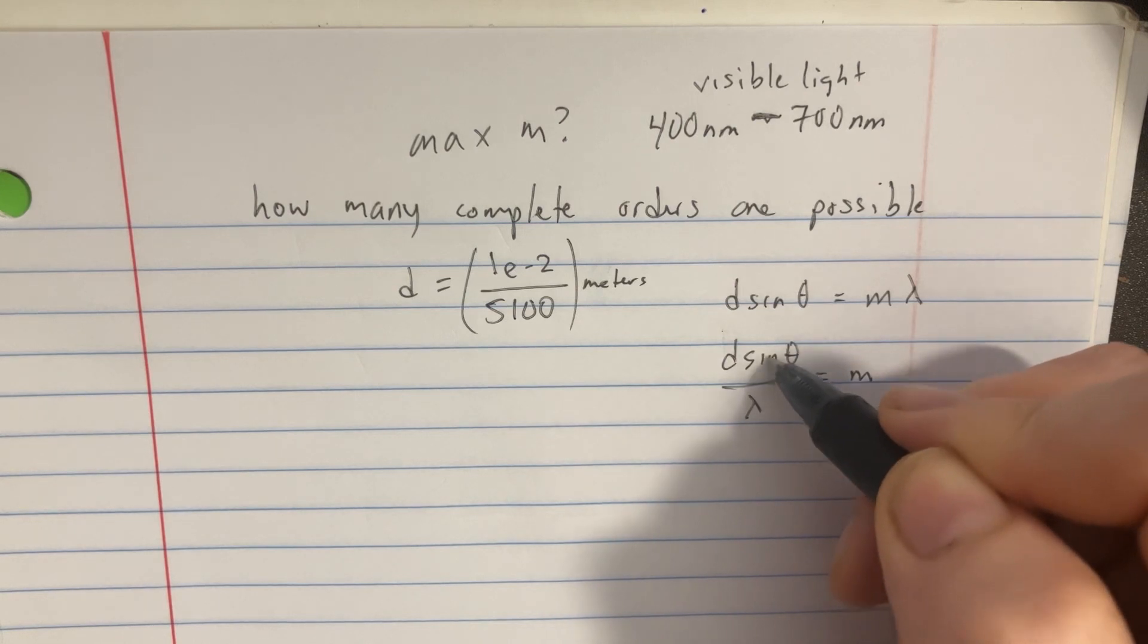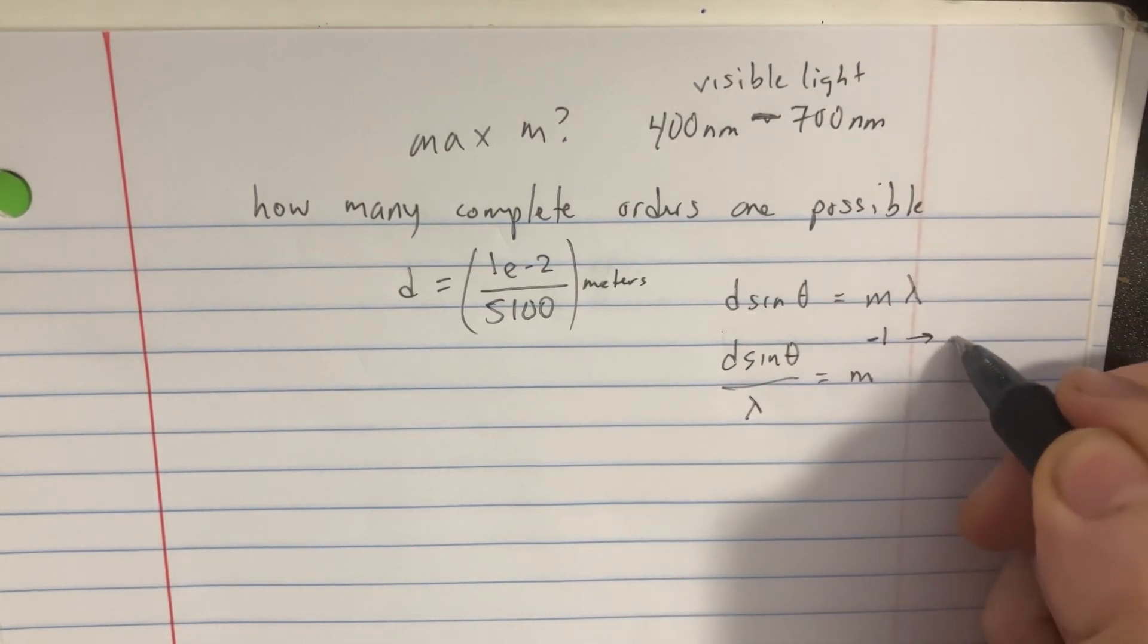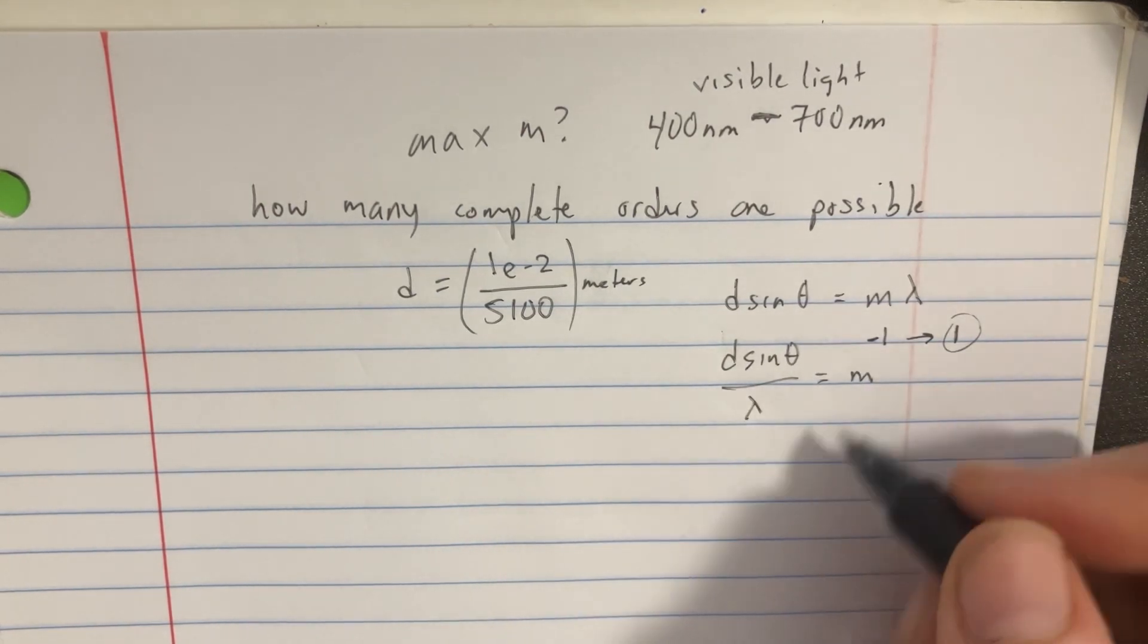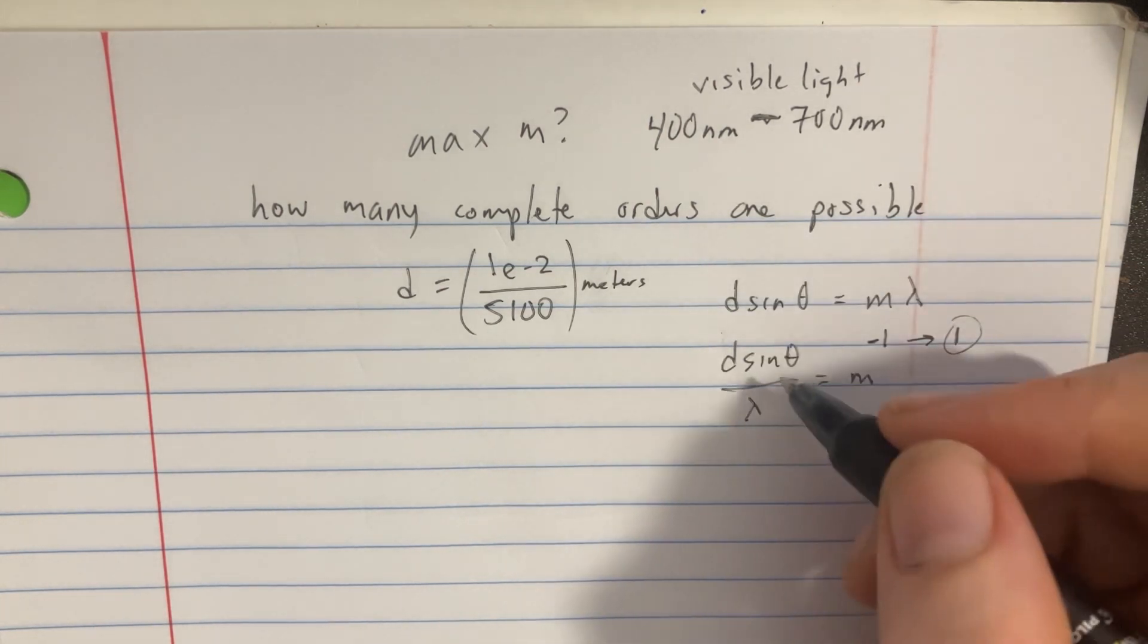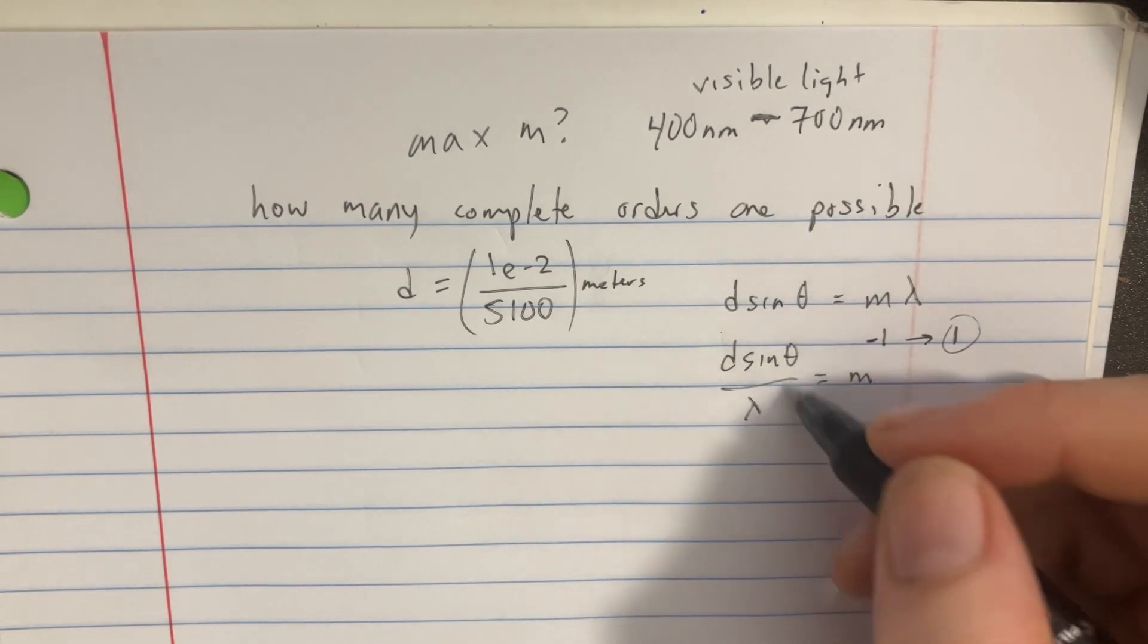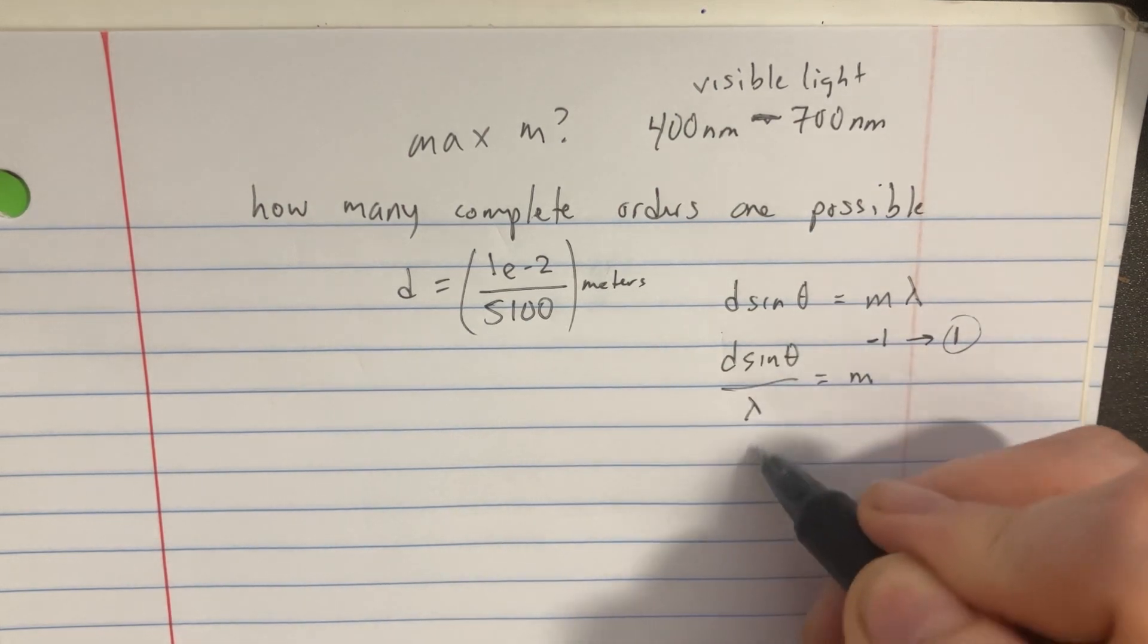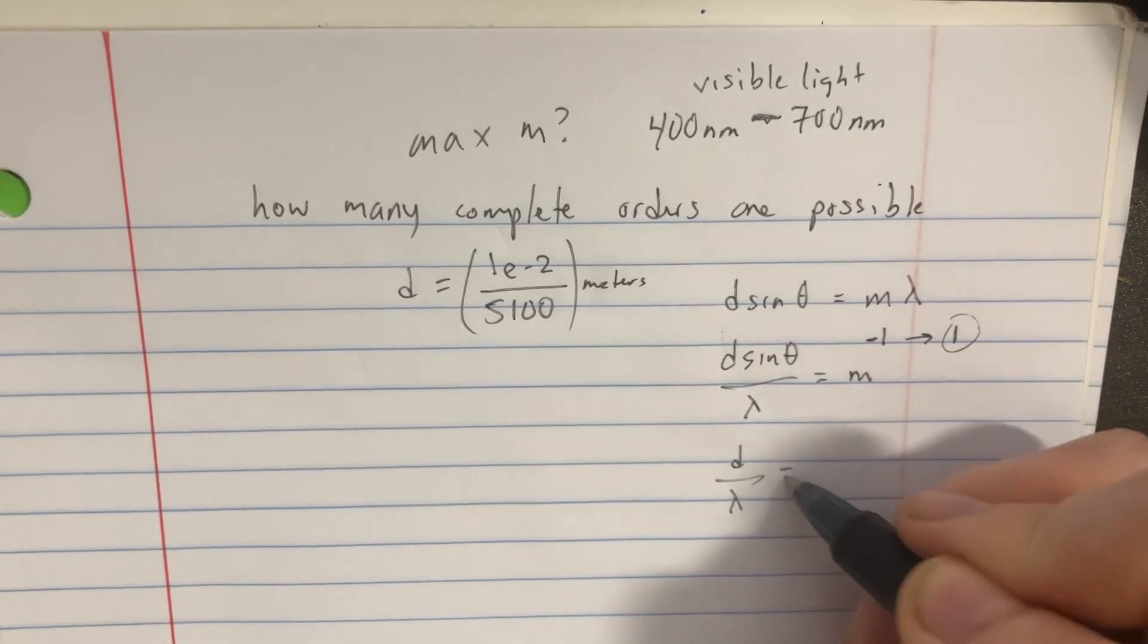The maximum minimum sine is always going to be from negative one to one. And so if we want the maximums, it's at one. So let's just call sine theta equal to one. And that's going to be the maximum possible we can get out of our angles. So we'll just say that d over lambda is equal to M.